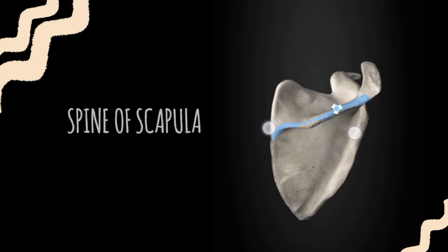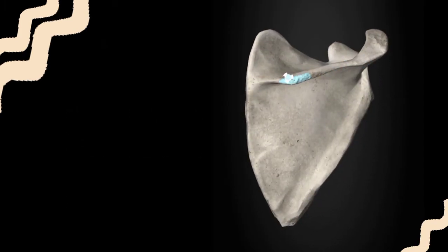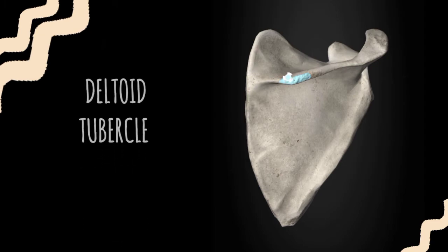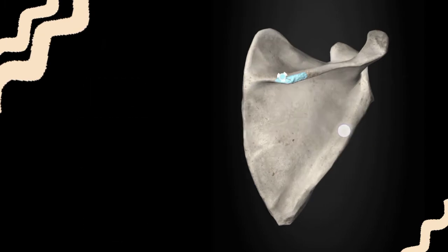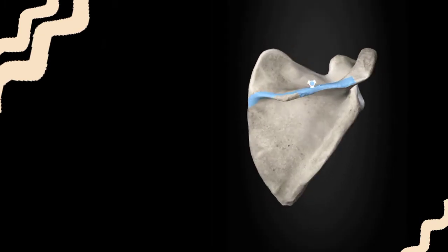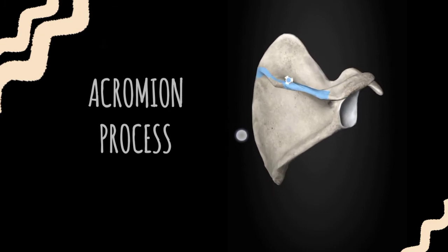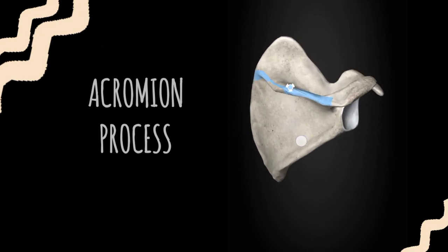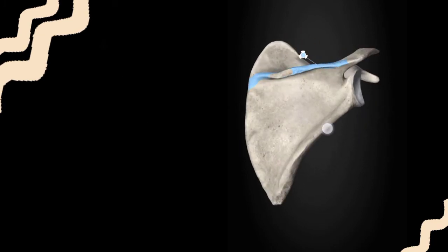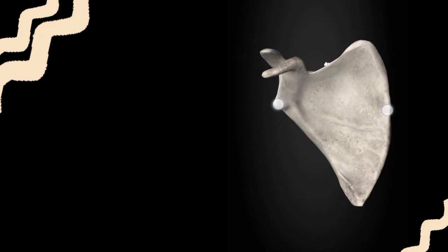Taking a close look at the spine of the scapula, there is a tubercle called the deltoid tubercle, which provides attachment to the deltoid muscle. The continuation of the spine of the scapula forms the acromion process at the top.